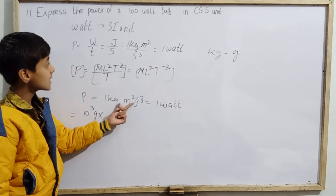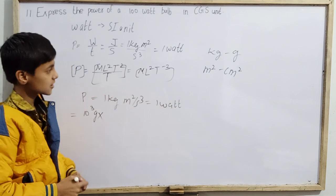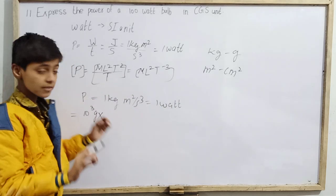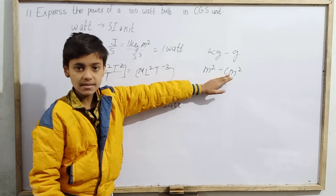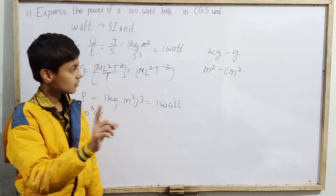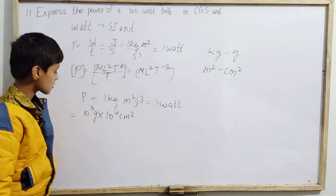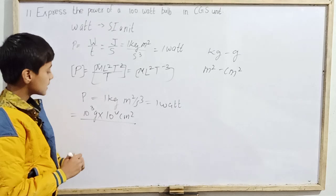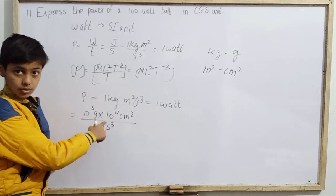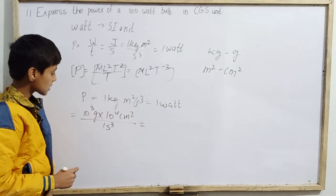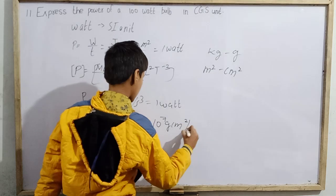Now, meter squared — how do we convert to centimeter squared? In 1 meter squared, there are 10² centimeters per meter, so 1 m² = 10⁴ cm². So we have: 1 watt = 10³ grams × 10⁴ cm² per second cubed. The seconds remain unchanged.